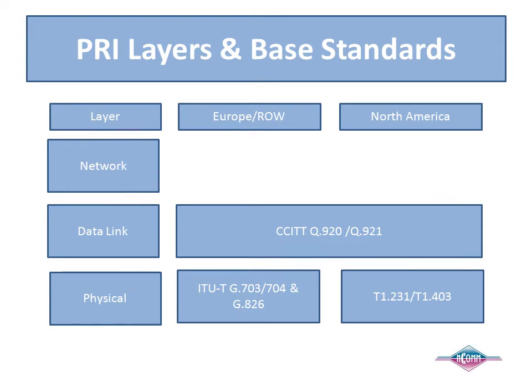Layer 3, the network layer, is where the ISDN protocol resides. Messages for establishing calls and control are handled here. The network layer finds the network interface and customer interface are different. Switch types define the protocol, and at this layer the state of the call — setup, conversation, and teardown — is managed. Alarms from Layer 2 impact the protocol at Layer 3.